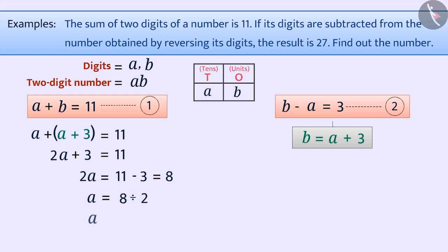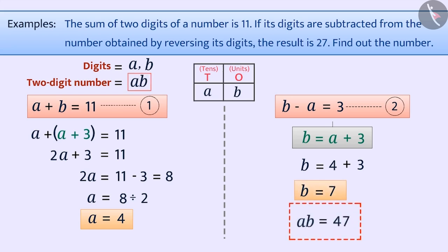A is equal to 8 divided by 2. That is, A is equal to 4. Since A is equal to 4 and B is equal to A plus 3, we can say that B is equal to 4 plus 3, which is equal to 7. In this way, the desired number will be 47.